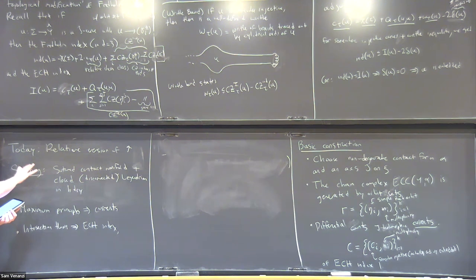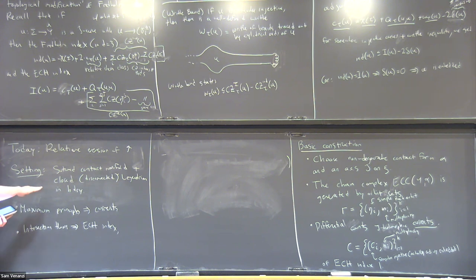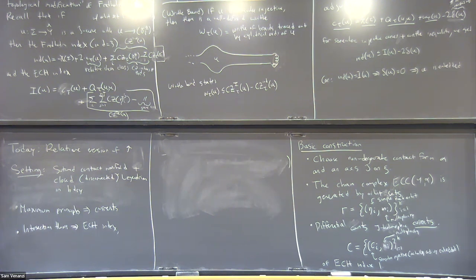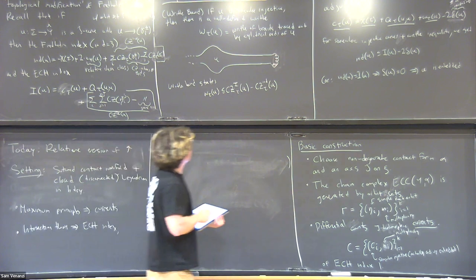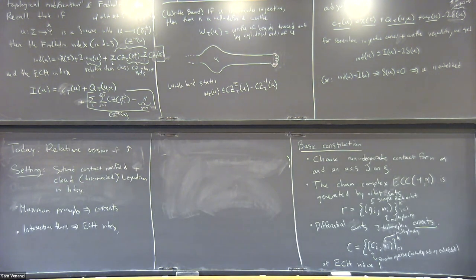The motivation is to find a real good reason why Heegaard Floer homology and ECH are the same. Presumably there's also some formula having to do with reconstructing the Heegaard Floer homology of the closed manifold from decompositions into sutured pieces. The ideal would be some sort of Legendrian surgery formula: do surgery on this Legendrian and it gives something with equivalent ECH—that would be the variance proof.